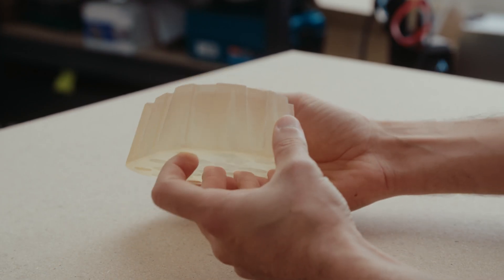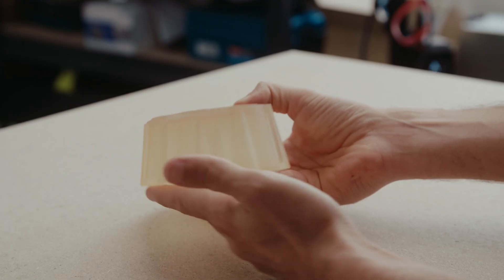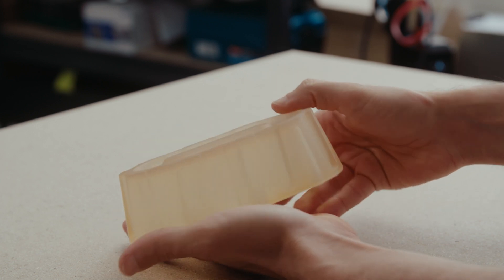First, we have draft angles. These slants applied to the faces of your model make demolding much easier. The more draft, the easier it is to remove the part from the template.